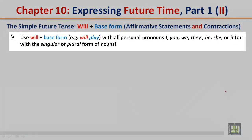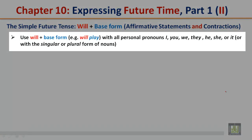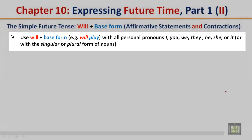Use will plus the base form — for example, 'will play,' where 'play' is the base form — with all personal pronouns: I, you, we, they, he, she, or it, or with the singular or plural form of nouns.